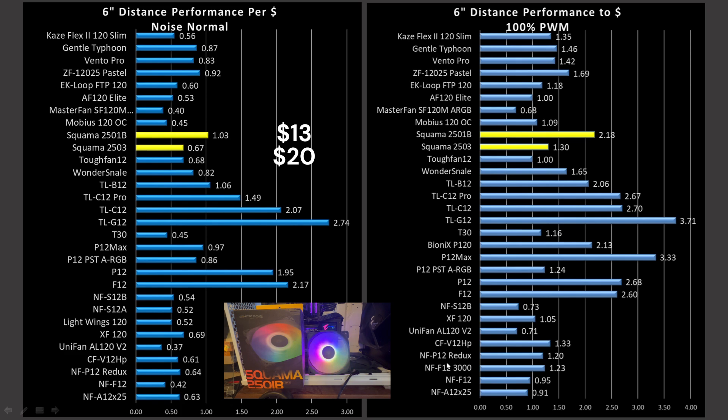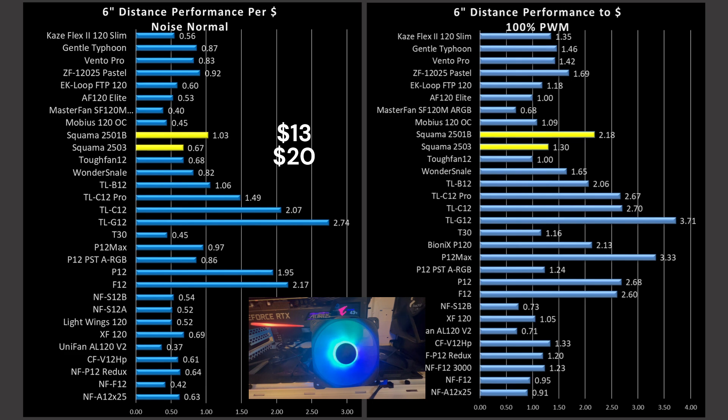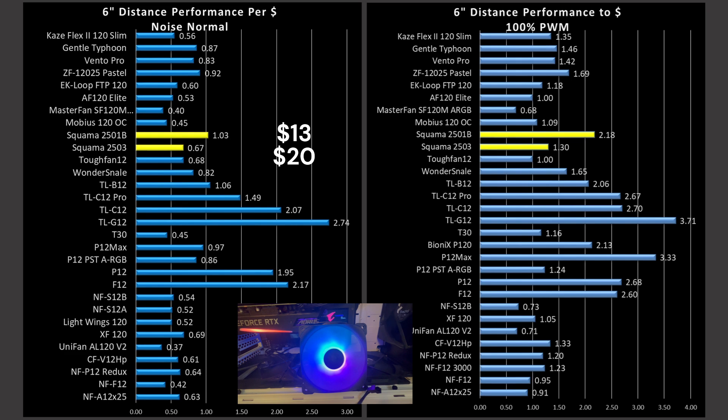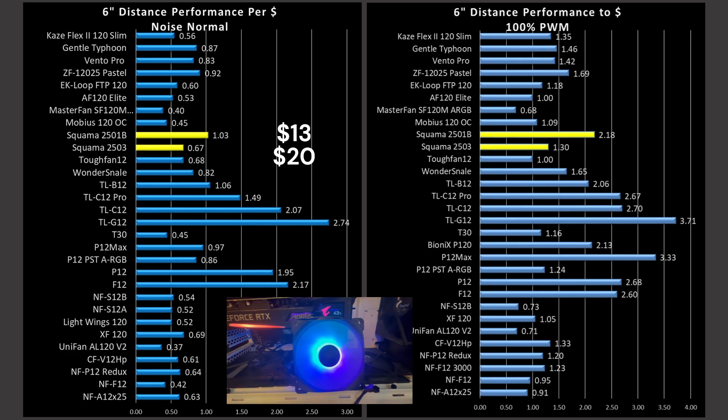All right, now we're on to value proposition. The Squama 2501 is a $13 fan, and the 2503 is a $20 fan. Both of them, as I found them, came in three packs. So just multiply that value by three, and you'll get the total price of the package. So it is expensive up front, but you get three fans, just saying. And value proposition is a real simple calculation. It's performance per dollar. If you're on an ultra-tight budget, well, that's when you'd pay special attention to this value proposition, and you'd get the best bang for the buck possible. So how do the Squamas rank? Well, they're relatively inexpensive because of that triple pack per fan. But if you only needed one fan, it's a pretty terrible choice because, again, you have to buy a triple pack. But if you do need three fans, their value proposition, specifically for the 2501, is actually pretty good for the 6-inch mark.